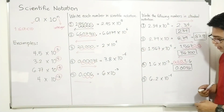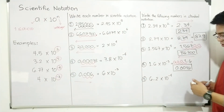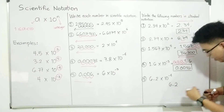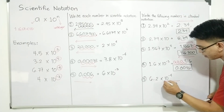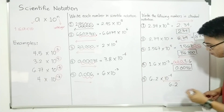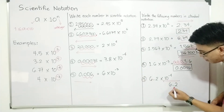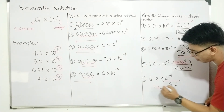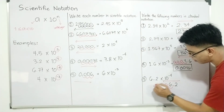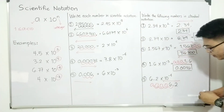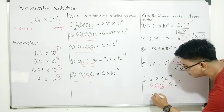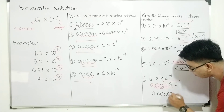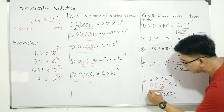For item number 5, we have 6.2 times 10 raised to negative 4. The exponent is negative 4, so we move from right to left 4 units: 1, 2, 3, and 4 — placing zeros. The correct answer for item number 5 is 0.00062.